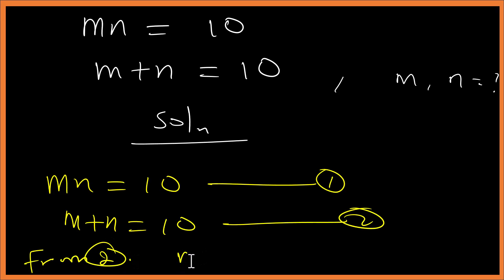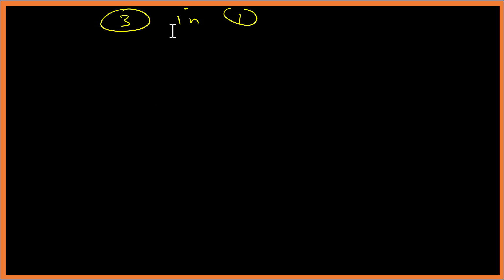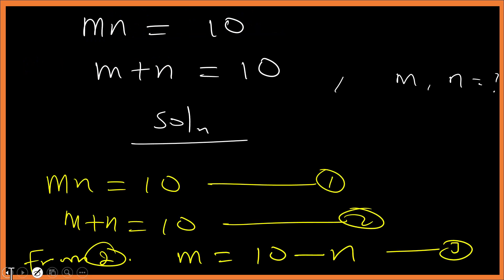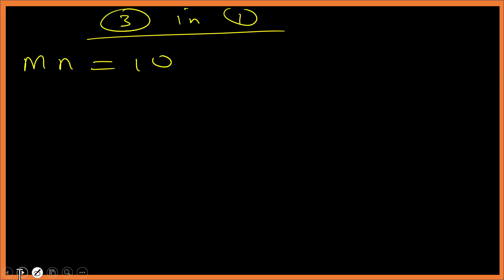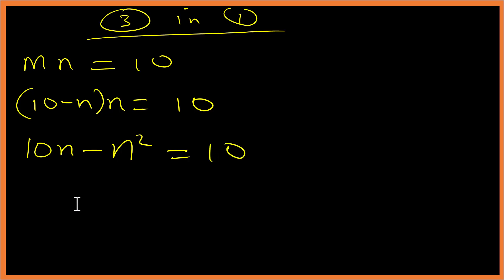From equation 2, m is the same as 10 minus n — let's call this equation 3. Now let's substitute equation 3 into equation 1. Remember equation 1 is mn equals 10, and m is 10 minus n, so we get (10 minus n) times n equals 10.